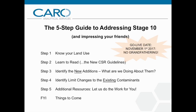Step three is identify the new additions, including an expanded list of existing chemical categories as well as some of the new emerging contaminants. Step four is identify limit changes to the existing contaminants — this is where we will explore some trends and what you might expect to see on a site-by-site basis. Step five covers additional resources for you to tap into. And last but not least, the things to come: there are a number of changes still in the books and we will address a few of the more popular topics.